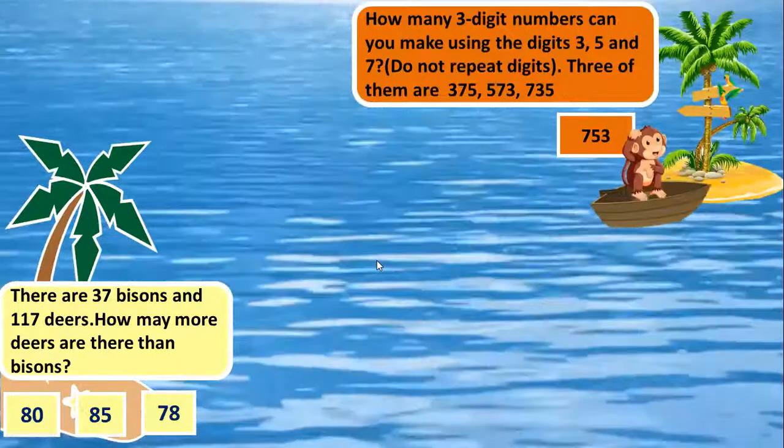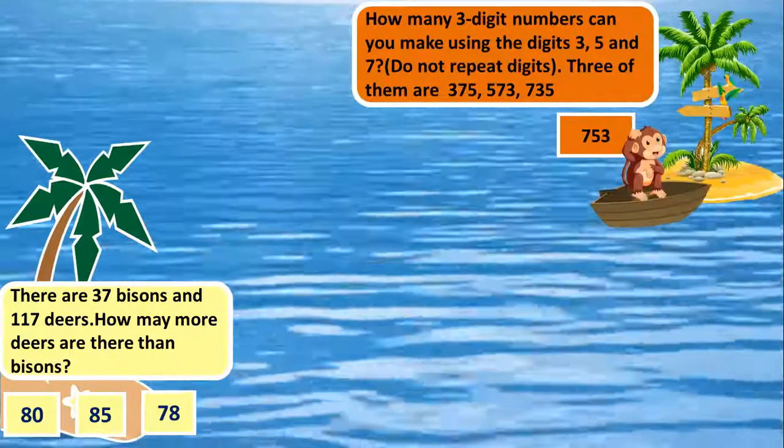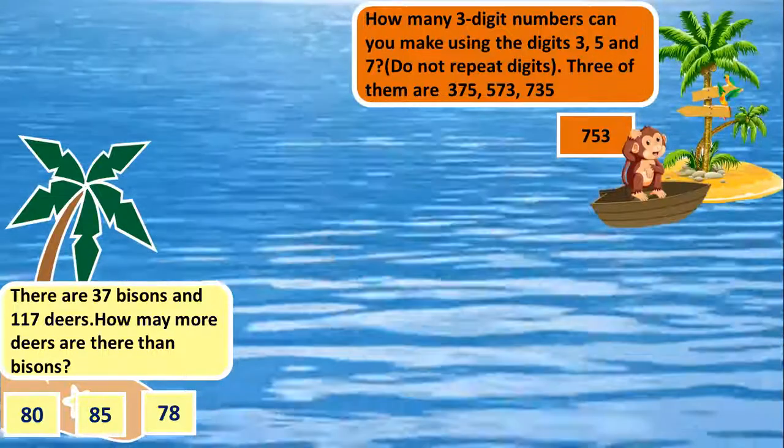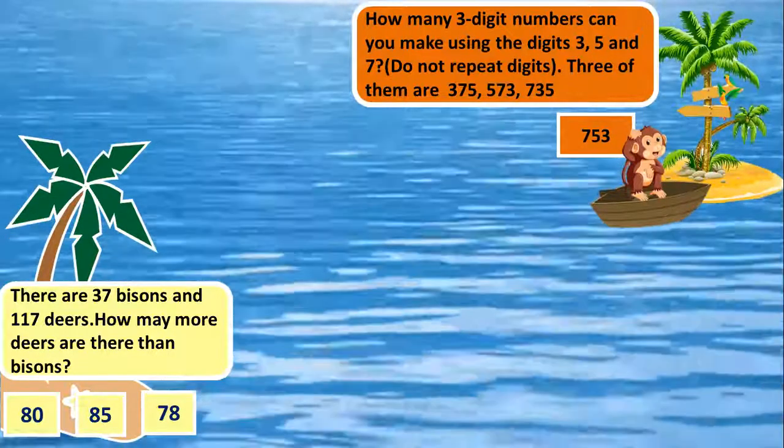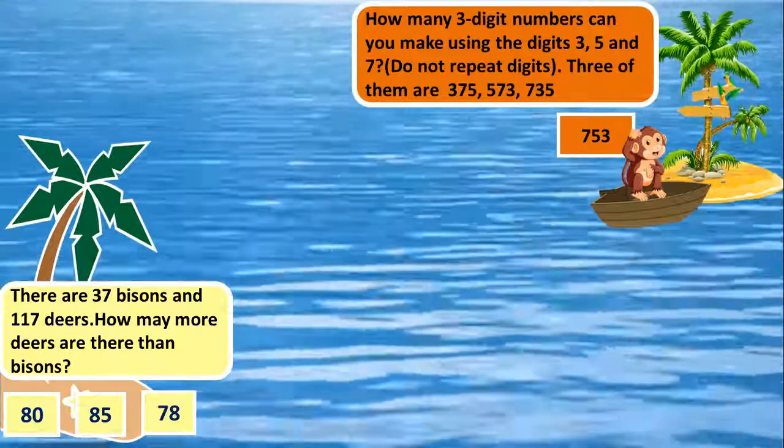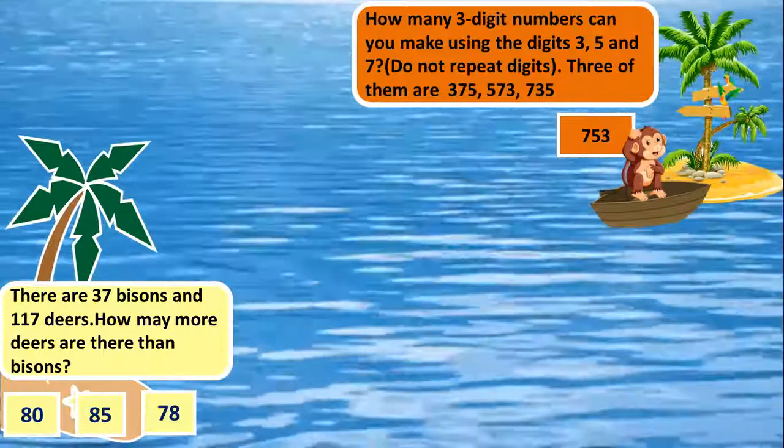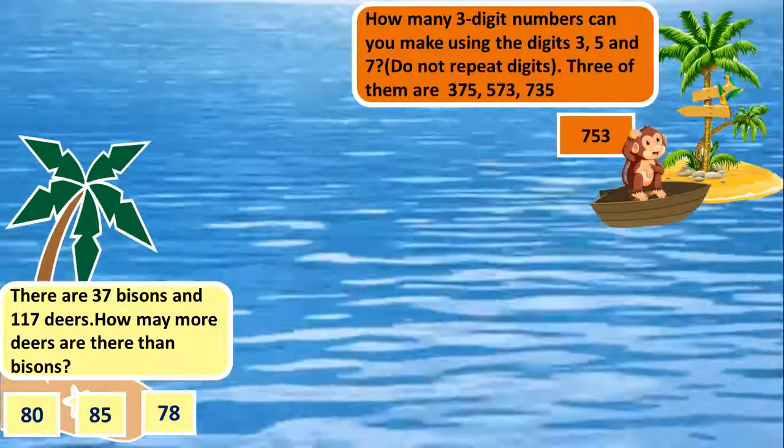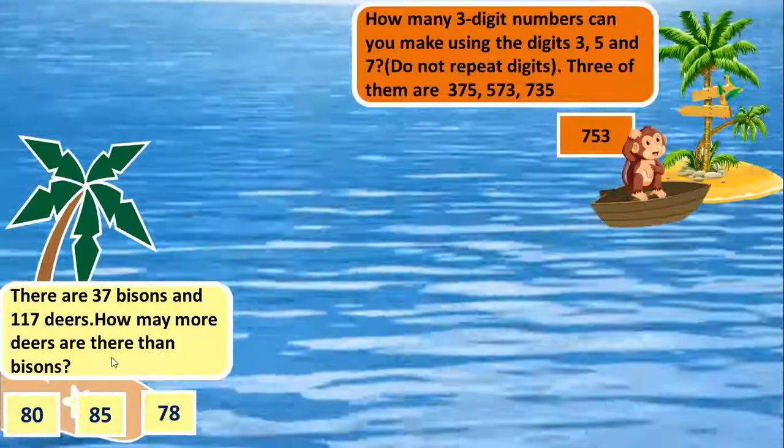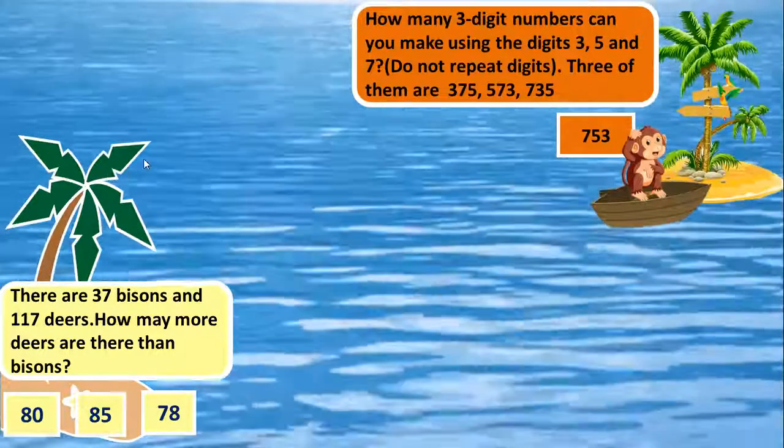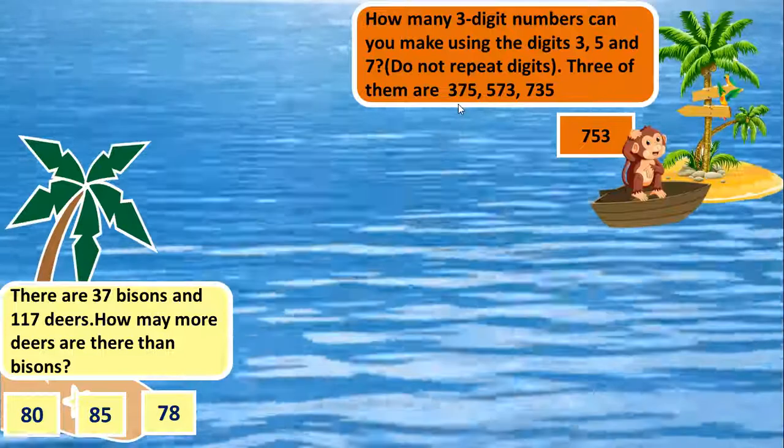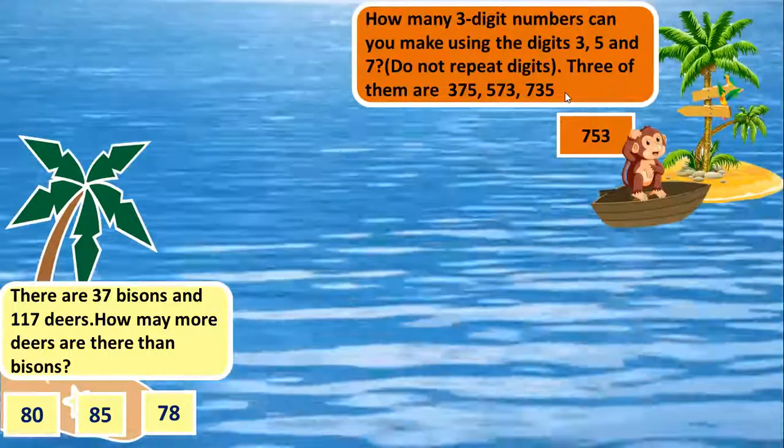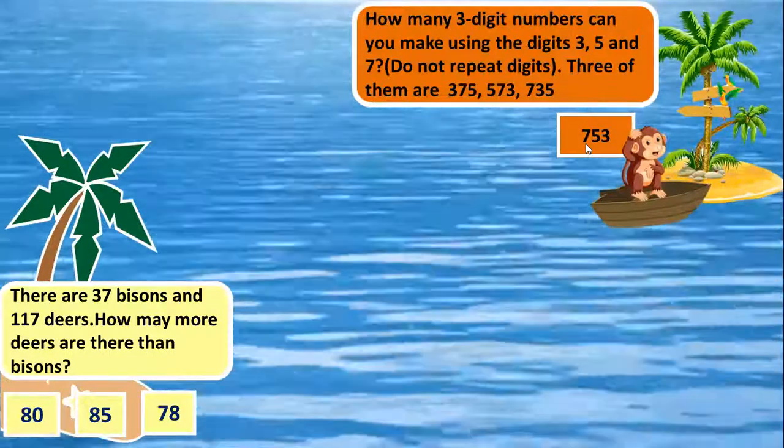How many 3 digit numbers can you make using the digits 3, 5 and 7? Children, don't repeat the digits. From that, 3 numbers are given for us. You need to find out 375, 573, 735. So it is 753.